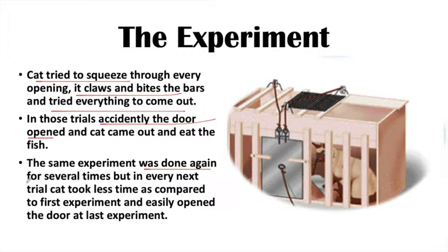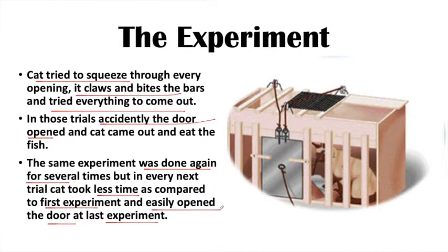In the next trials, the cat took less time than in the first experiment. As the experiment was repeated, in every trial the cat took less and less time to come out. In the last experiment, the cat opened the door easily. This experiment explained the learning process.